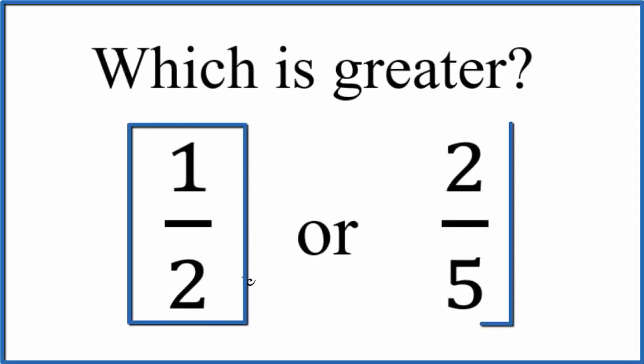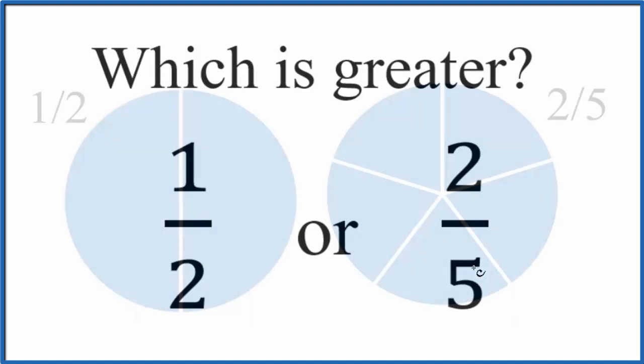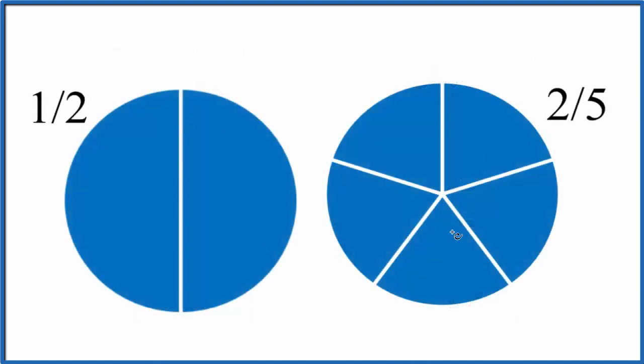Which is greater, one half or two fifths? We have two circles here. This one's divided into two pieces, divided into half, and each part is one half. Over here we have five pieces, so each piece is one-fifth.